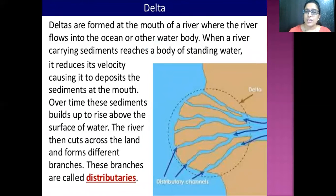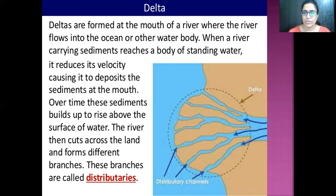The next change brought by the river is the delta. Deltas are formed at the mouth of a river where it flows into the ocean or other water bodies. When a river carrying sediments reaches standing water, it reduces its velocity, depositing sediments at the mouth. Over time, these sediments build up above the water surface, and the river cuts across the land forming different branches called distributaries.